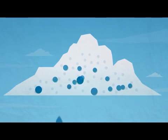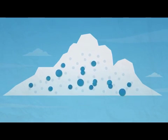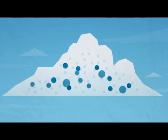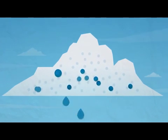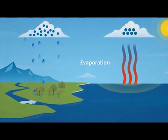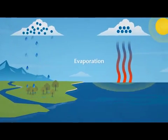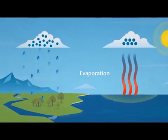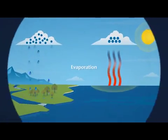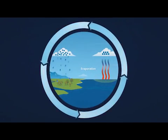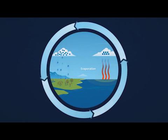Every single raindrop that reaches the ground is made up of one million of the original tiny water droplets. Raindrops fall on the ground surface where the Sun can shine on them and the whole process happens again. This is called the water cycle and keeps water moving from the ground to the sky, providing the water needed for plants, animals and people to survive.